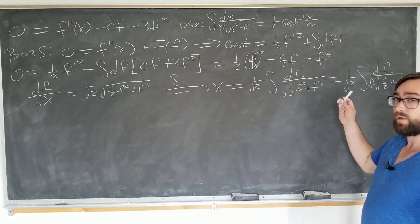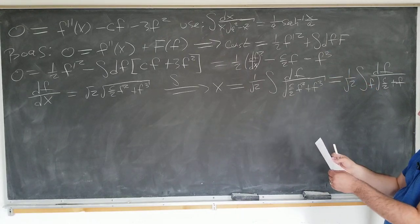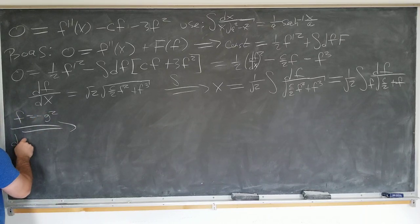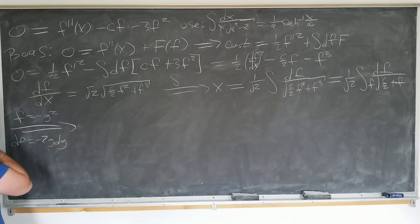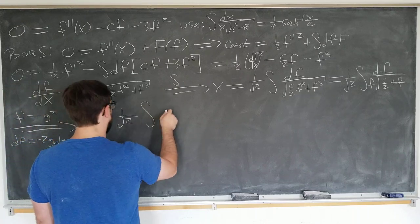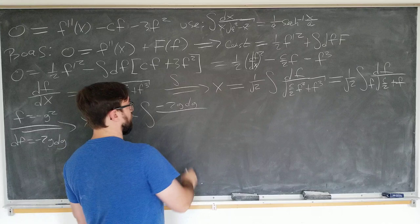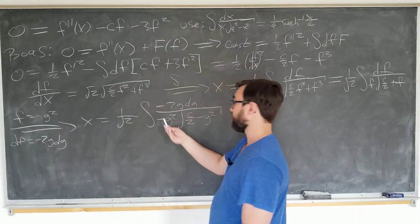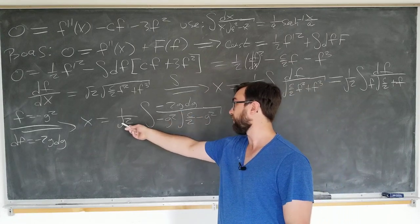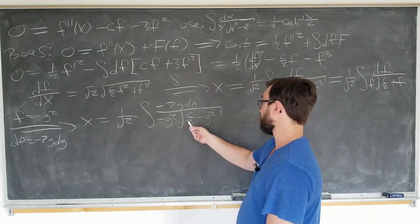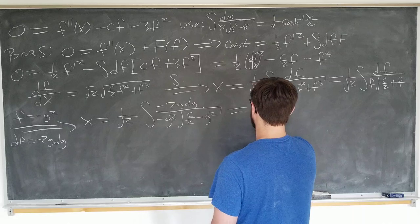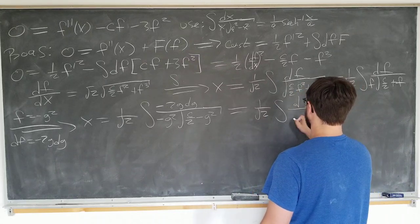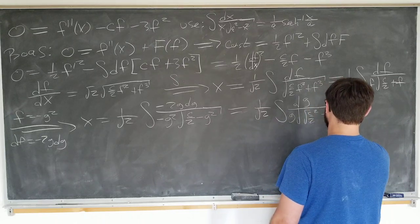So we would like to put this integral into a form that could be used with that. And to do that, let's make a simple substitution. We're going to be letting f to be minus g squared. In that case, df is just minus 2g dg. And we have x is 1 over the square root of 2 integral minus 2g dg over minus g squared, square root of c over 2 minus g squared. We're going to cancel the minus signs, cancel the g, we're going to take the 2 and this to combine to just make regular square root of 2. We're going to write this as square root of c over 2 squared to get 1 over square root of 2 integral dg over g square root of square root of c over 2 squared minus g squared.